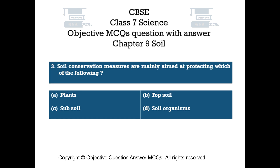Question number 3. Soil conservation measures are mainly aimed at protecting which of the following? Option A: Plants. Option B: Topsoil. Option C: Subsoil. Option D: Soil organisms.